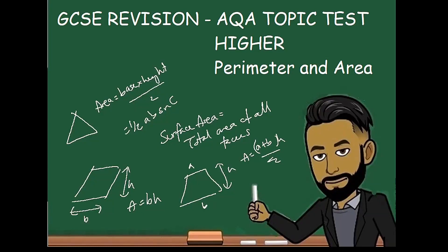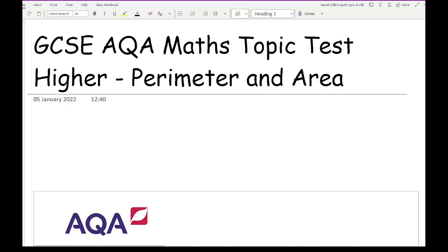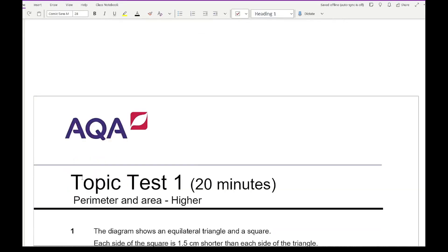Welcome everybody to this latest GCSE video on 162 Maths. In this video we'll be going over the AQA topic test on the higher syllabus relating to perimeter and area. There will be a copy of the questions in the description below for you to download and have an attempt at before watching this video and going through the answers. So let's get started on this perimeter and area higher GCSE Maths topic test.